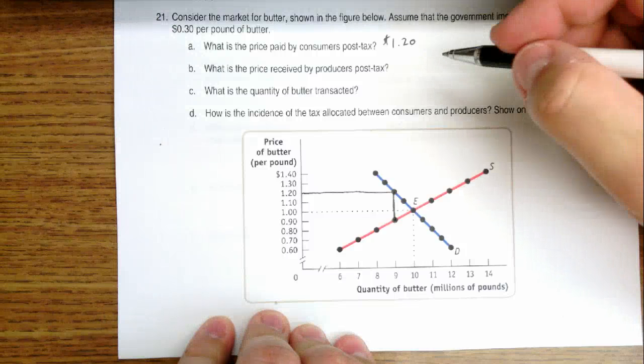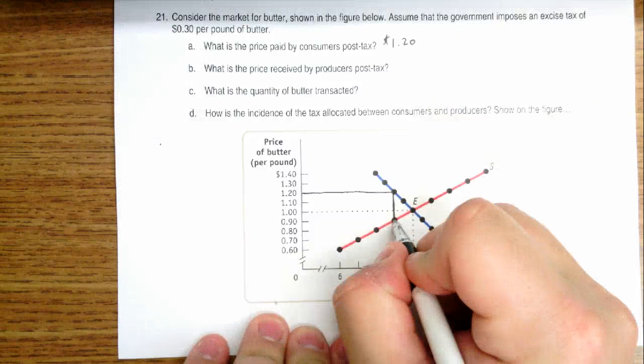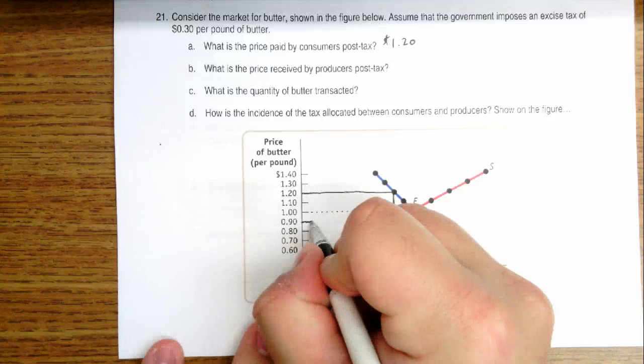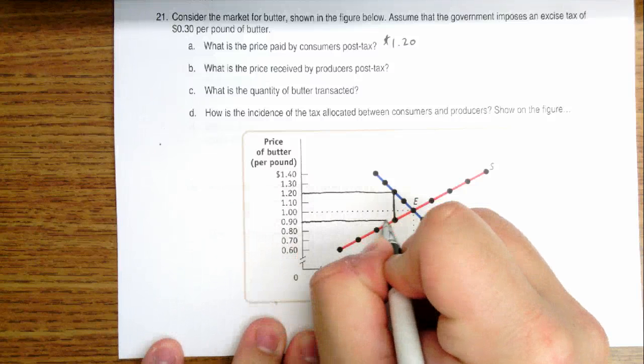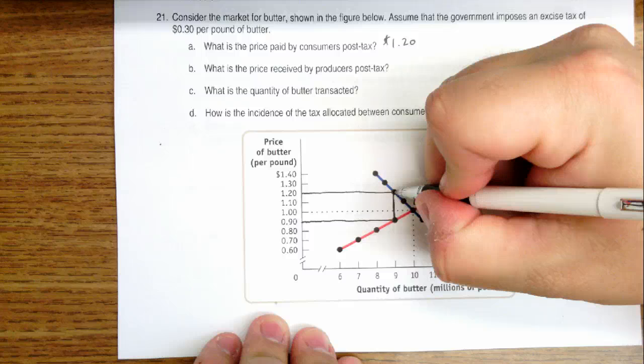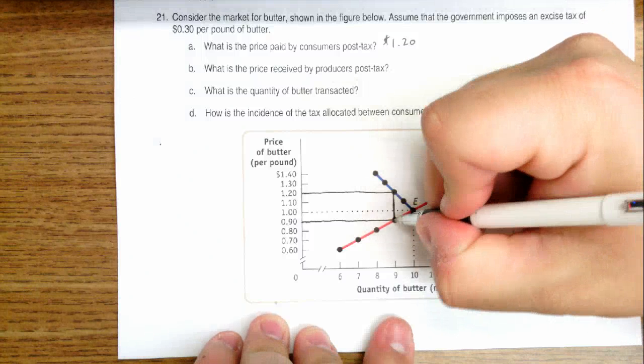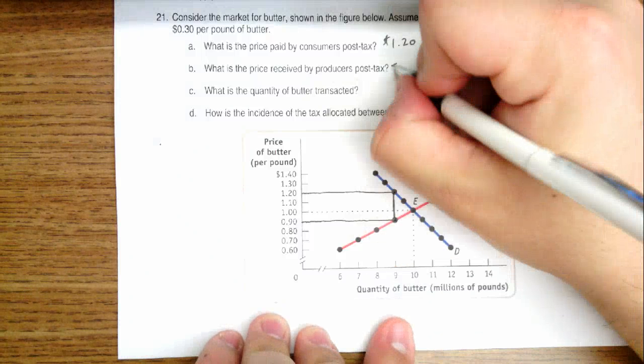The price received by producers after the tax is the supply price, which is at $0.90. We're charging $1.20, $0.30 goes to the government. What's left is the $0.90 to the producer.